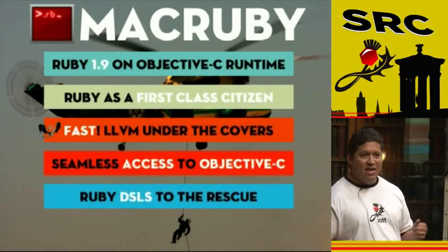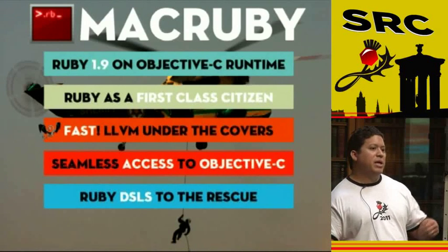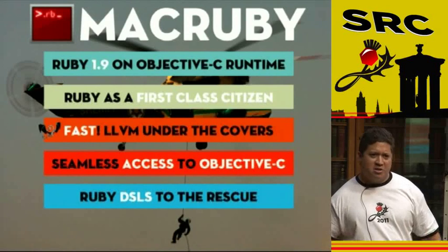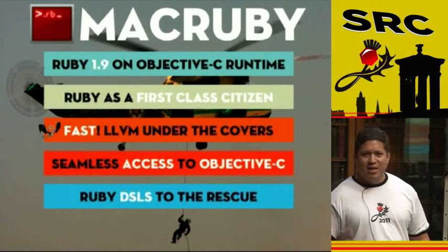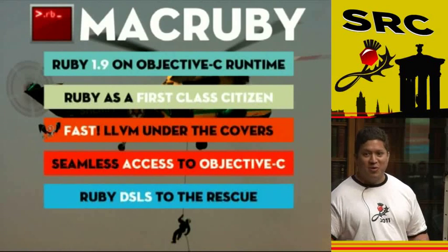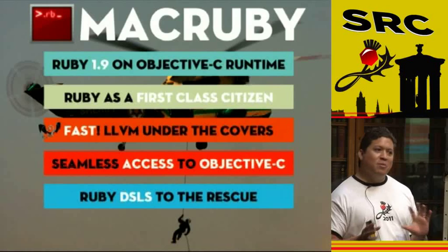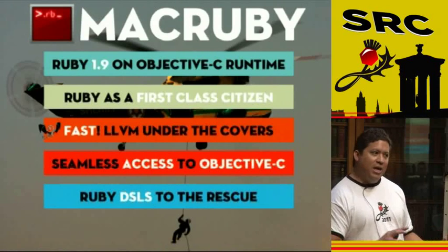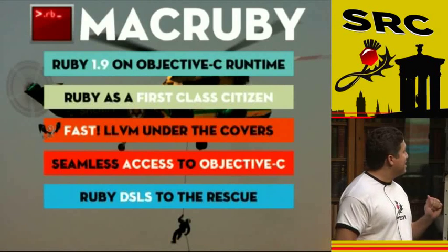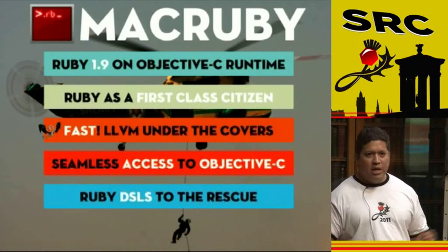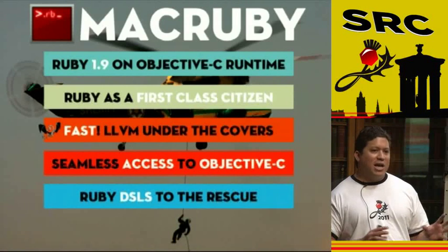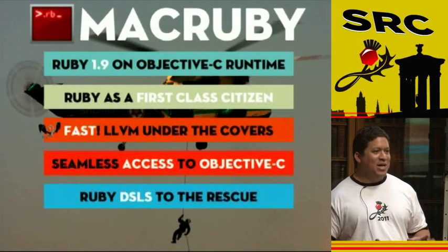MacRuby is really fast — something not many Rubyists boast about to their friends. You don't show them fast code; you show them beautiful code and they don't care if it's slow. But with MacRuby, you have the combination of speed and the Ruby language. You also have seamless access to Objective-C. Once you see some of the Objective-C code, you'll realize why we need Ruby to make it palatable.